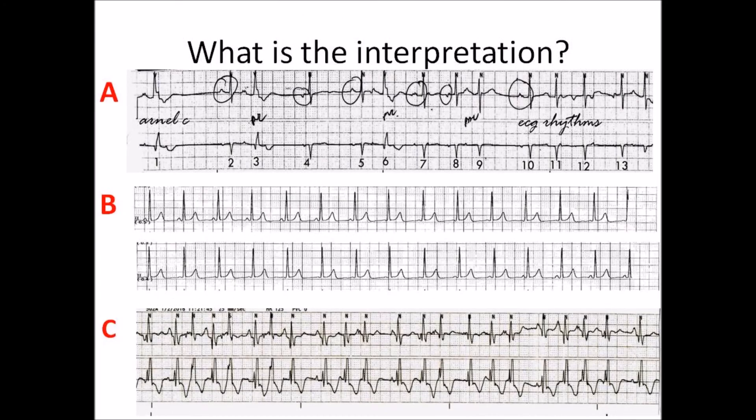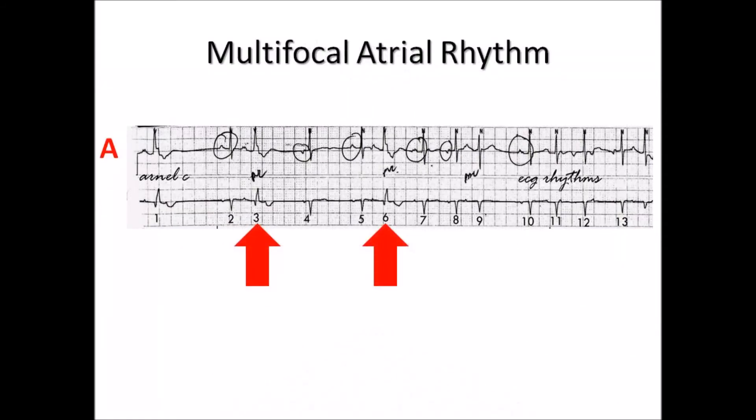So, what is the interpretation? Strip A is multifocal atrial rhythm. Notice the different P-wave morphology, variable PP, RR, and PR intervals. Some of the premature atrial beats are conducted with aberrancy, as you can see in QRS number 7 and number 8, which are highlighted with red arrows.